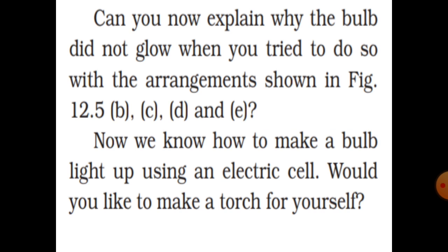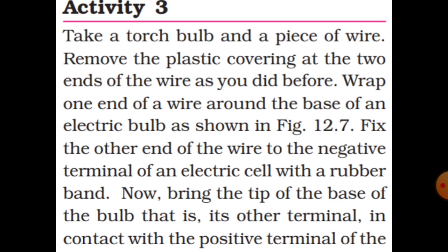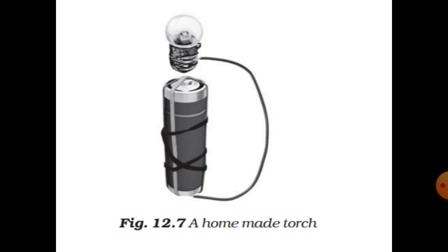Now we know how to make a bulb light up using an electric cell. Take a torch bulb and a piece of wire. Remove the plastic covering at the two ends of the wire. Wrap one end of the wire around the base of the electric bulb as shown in the figure. Fix the other end to the negative terminal of the electric cell with a rubber band. Now bring the tip of the base of the bulb — its other terminal — in contact with the positive terminal of the cell.